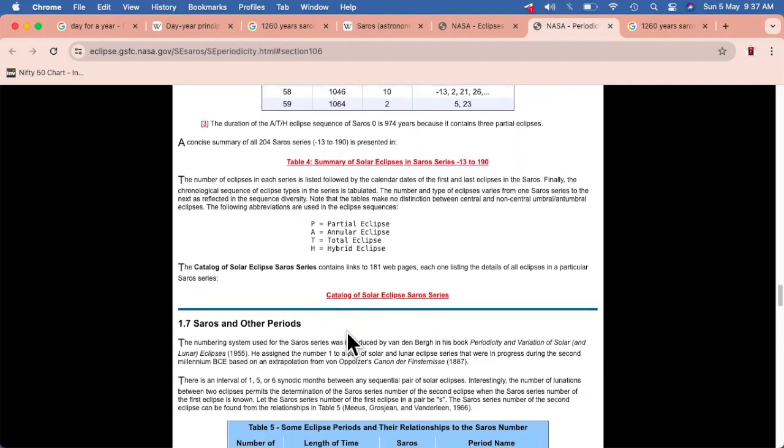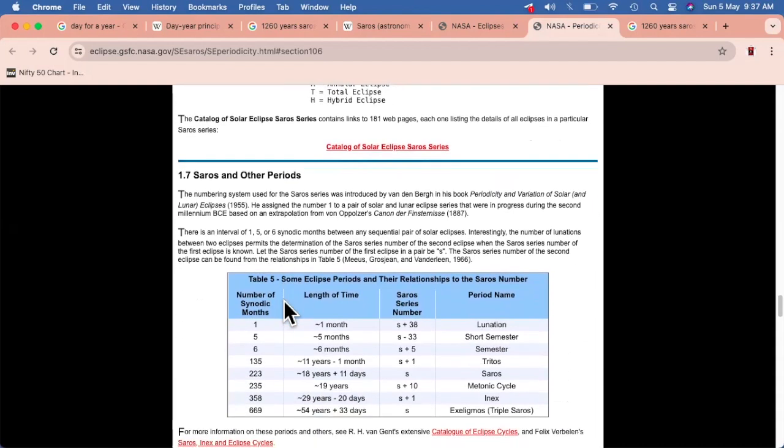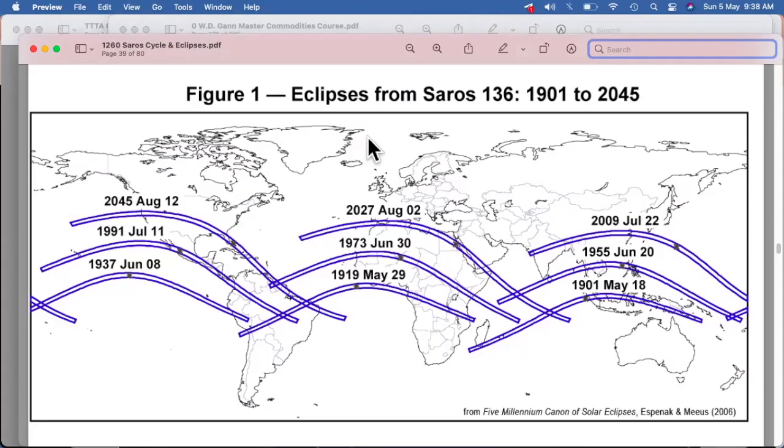Which Saros cycle is there, these are being given in details. So you can get more information regarding this on the websites also. There are various terminologies which probably you'll be able to find out and understand more about this. So these are the eclipses from 1901 to 2045.